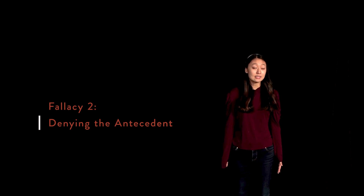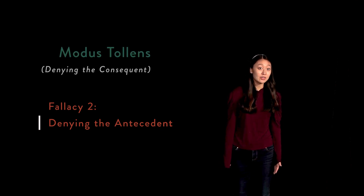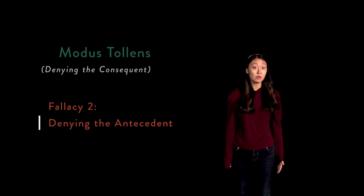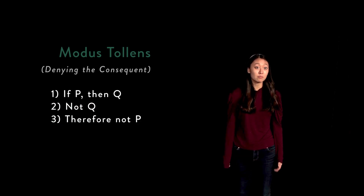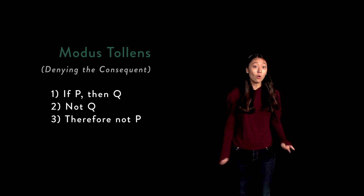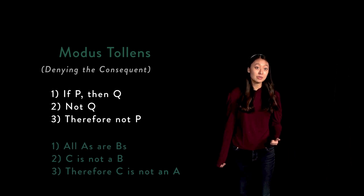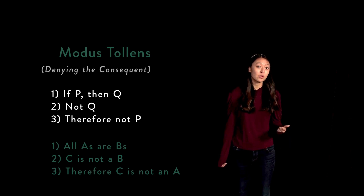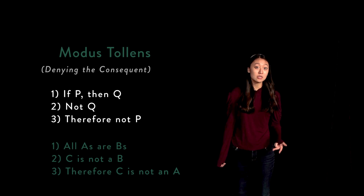The second mistake, denying the antecedent, relates to modus tollens — also known as denying the consequent — in a similar way to how affirming the consequent relates to modus ponens. Modus tollens has the form: 1. If P, then Q. 2. Not Q. 3. Therefore, not P. Or, for only categorical propositions: 1. All A's are B's. 2. C is not a B, or no C's are B's. 3. Therefore, C is not an A, or no C's are A's.